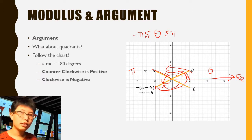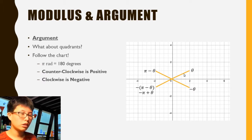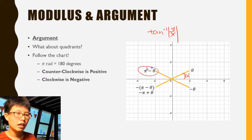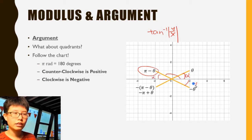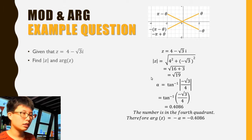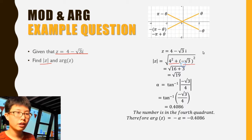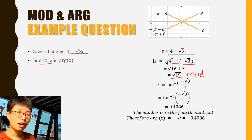So what I do is calculate alpha using tangent inverse of y over x, then check which quadrant it's in. Depending on the quadrant, I may take pi minus alpha, or just negative alpha. Let's go to an example: find the modulus of z where z = 4 − √3i. You take these two parts, square them, and you get the square root of 19 as your modulus.